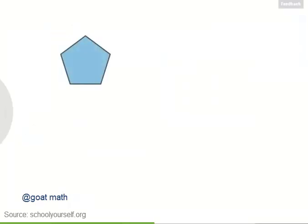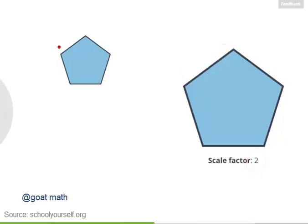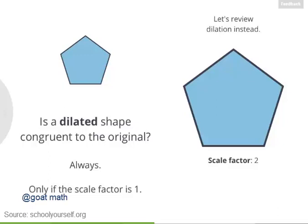Next, let's take this pentagon and dilate it so it has the same overall shape but a different size. For this specific dilation, the scale factor was 2, so all the lengths of this pentagon are twice the corresponding lengths of the original pentagon. So, is a dilated shape congruent to the original?